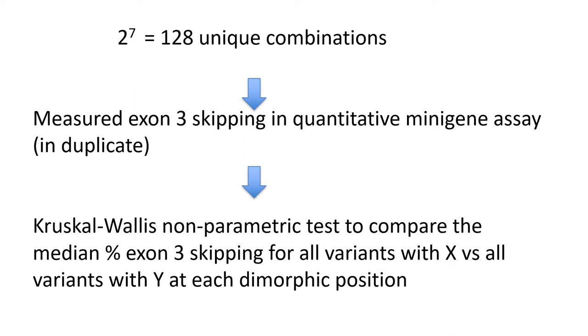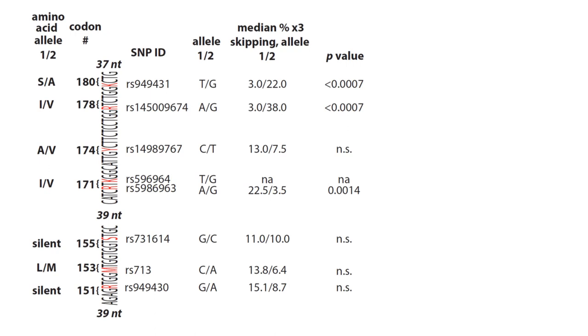To get at this we created 128 different minigenes, each had a unique combination of the exon 3 polymorphisms, and then we measured exon 3 skipping in our quantitative minigene assay. We did this in duplicate and then we did a Kruskal-Wallis nonparametric test to compare the median percent exon 3 for all variants with X versus all variants with Y at each of the dimorphic positions, and the results of that assay are shown here.